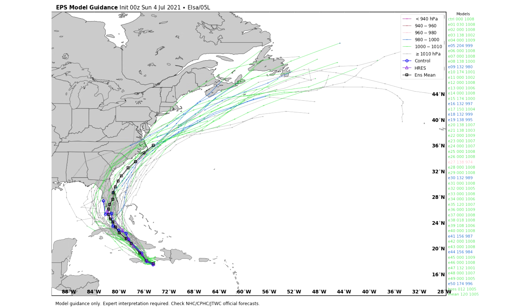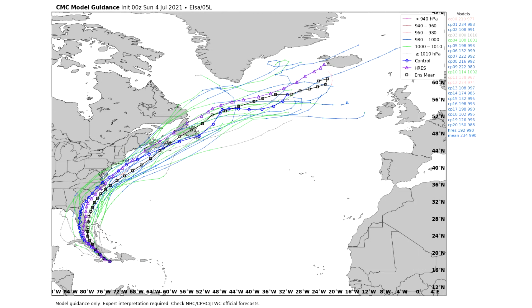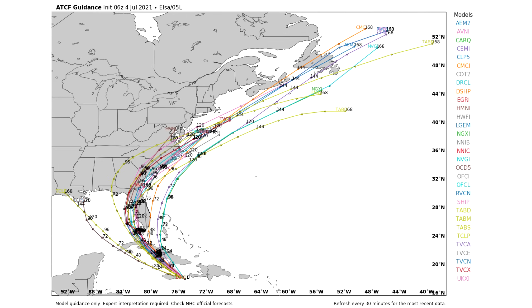We'll probably know by tomorrow what's going to happen for sure. The Canadian ensemble model is even further east than the European model — it has the middle of Florida or even the east coast getting hit the worst, then impacting the eastern seaboard. The individual models are not as far west as the GFS and have many tracks hitting near Tampa before heading offshore of the east coast, bringing moderate to major impacts.